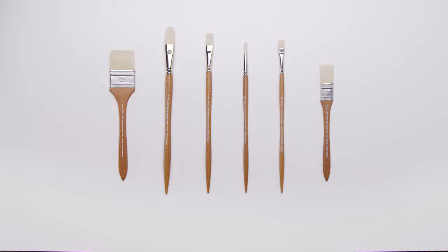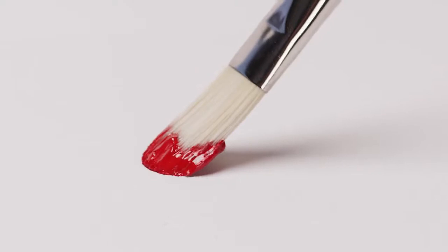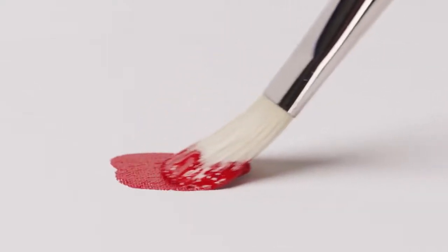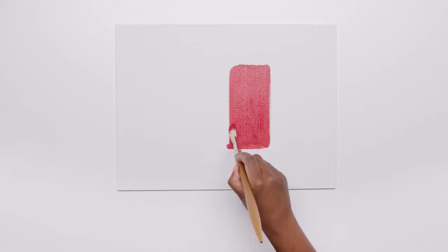I'm going to start with the Filbert brush in size 10. These are great brushes for covering a large area and for blending two colours together. You can see the amount of colour this brush can carry, which allows me to lay out a base quickly.